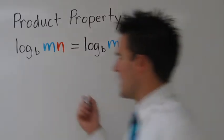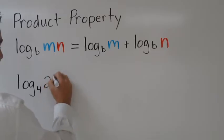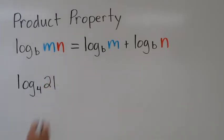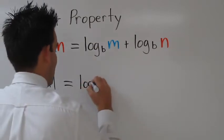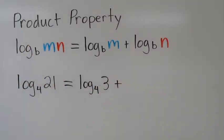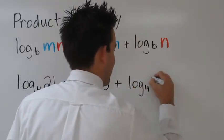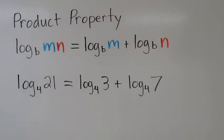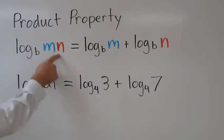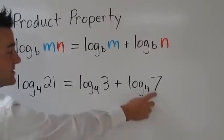Let's see an example of this. If we had log base 4 of 21, we could rewrite this as log base 4 of 3 plus log base 4 of 7. In this situation, we're saying 3 times 7 equals 21. So our m is 3 and our n is 7. So we can rewrite it as log base 4 of 3, our m, plus log base 4 of 7, our n.